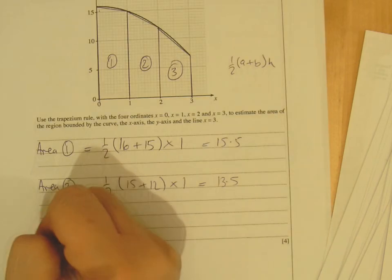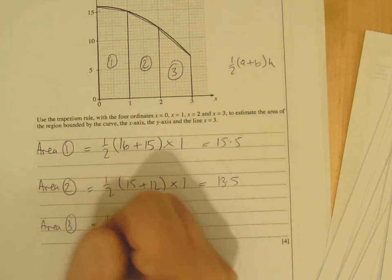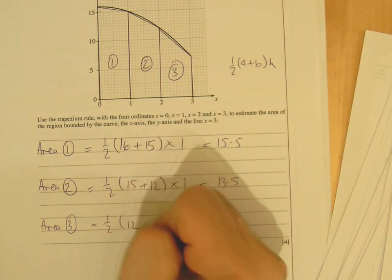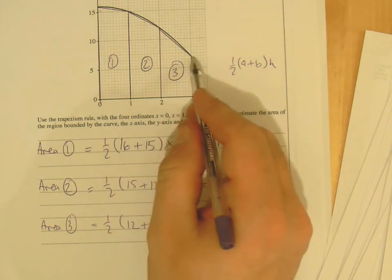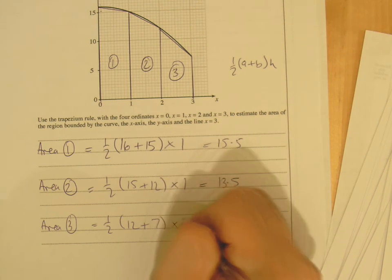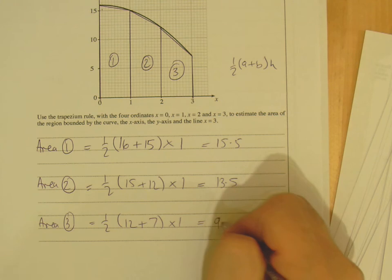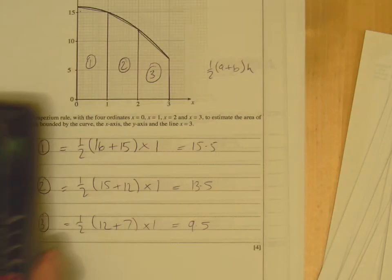And area 3, half, you've got your 12 there, plus then your length there, which is 7, times then the height between them, which is 1, so that's 9.5 when you work that out on your calculator.